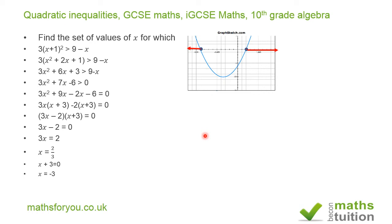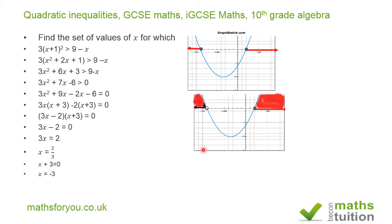The valid regions are the shaded areas on either side of the critical points. So our final solution is: x is greater than 2/3 or x is less than minus 3. I hope that all made some sense — please subscribe and thank you for watching!